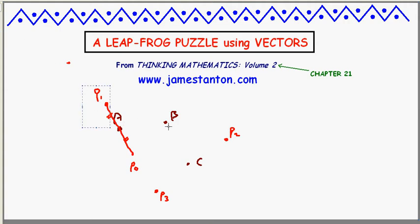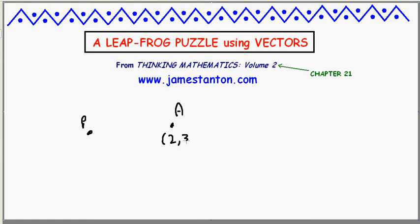Before I do this, I need to actually explain how vectors work. Now, I do that in a video called What is a Vector? And I'll give you a very sort of brief synopsis of that work right now. For example, here's a point P. Here's a point A. Suppose I actually give coordinates. Suppose this is the point 2, 3, and this is the point 0, 1. To leapfrog, that means I actually have to move from P to A.